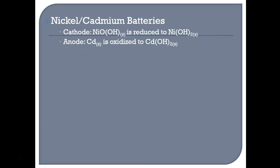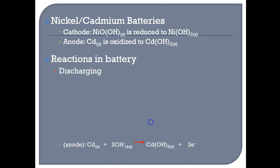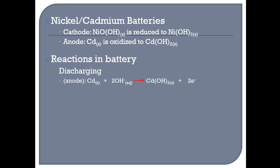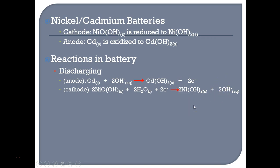Next is the nickel-cadmium battery. At the cathode, we have a nickel-oxygen-hydroxide complex that will be reduced into nickel-2 hydroxide. At the anode, cadmium will be oxidized into cadmium-2 hydroxide. Because we're producing bases at both electrodes, our electrolyte is going to be an alkali — probably sodium or potassium hydroxide. When discharging at the anode, cadmium produces cadmium-2 hydroxide by reacting with two hydroxide ions, freeing up a pair of electrons. Those two electrons at the cathode add to the NiOOH with water to produce nickel-2 hydroxide and hydroxide ions. The hydroxide ions are consumed at the anode and produced again at the cathode, so we don't have to continually add base. To charge, just reverse these equations.